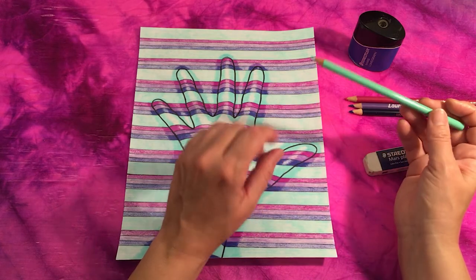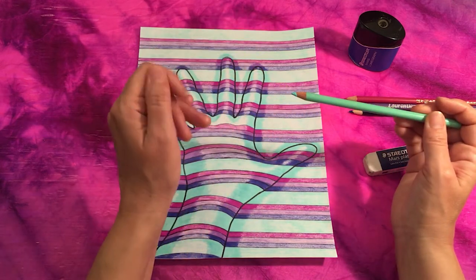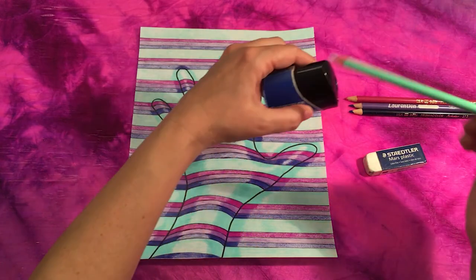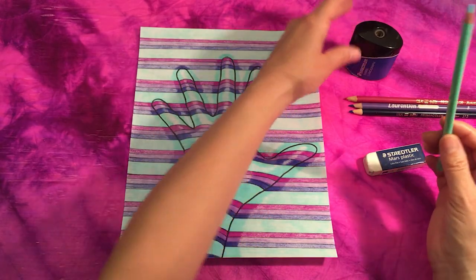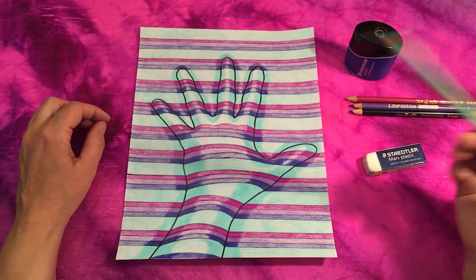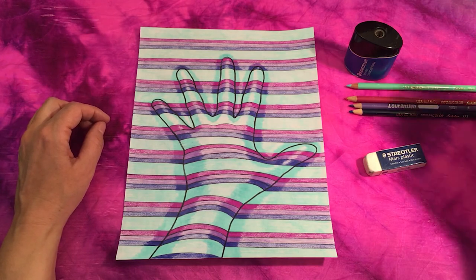And sometimes the lead can be broken inside a colored pencil. So what you could do in that instance is just pull out the piece of loose lead and then continue sharpening your pencil crayon so that it's nice and sharp again. And then just continue from that point on.